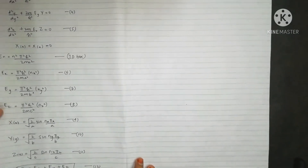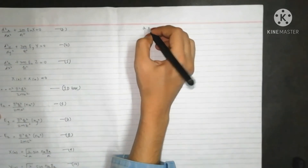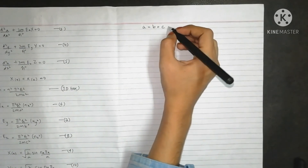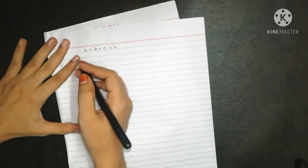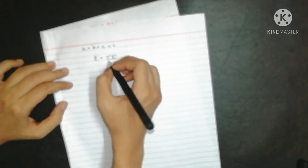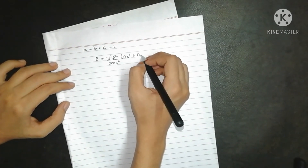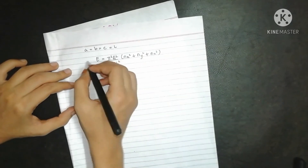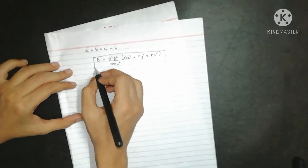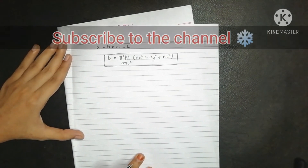For a three-dimensional cubic box, assume all sides are equal: a = b = c = L. Substituting L for a, b, and c, the energy simplifies to: E = (π²h-bar²/2mL²)·(nx² + ny² + nz²).